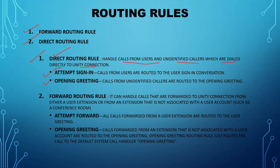After reaching the direct routing rule there are two options: attempt sign-in and opening greeting. It will hit attempt sign-in when calls from users are routed to the user sign-in conversation — meaning if that number is known to Cisco Unity Connection. For example, if you are calling from extension 55555 which is configured in both CUCM and Unity, it will ask you to attempt sign-in, you enter your PIN, and it goes directly to your voicemail box.